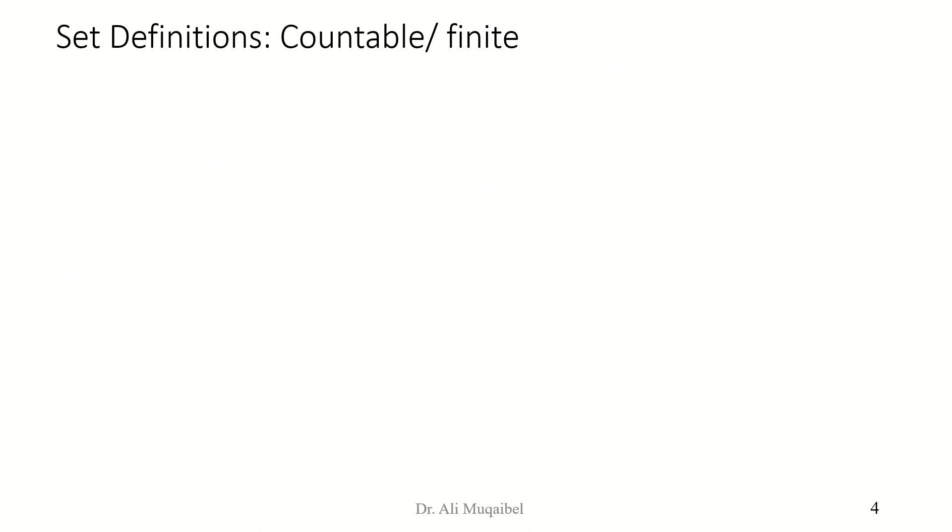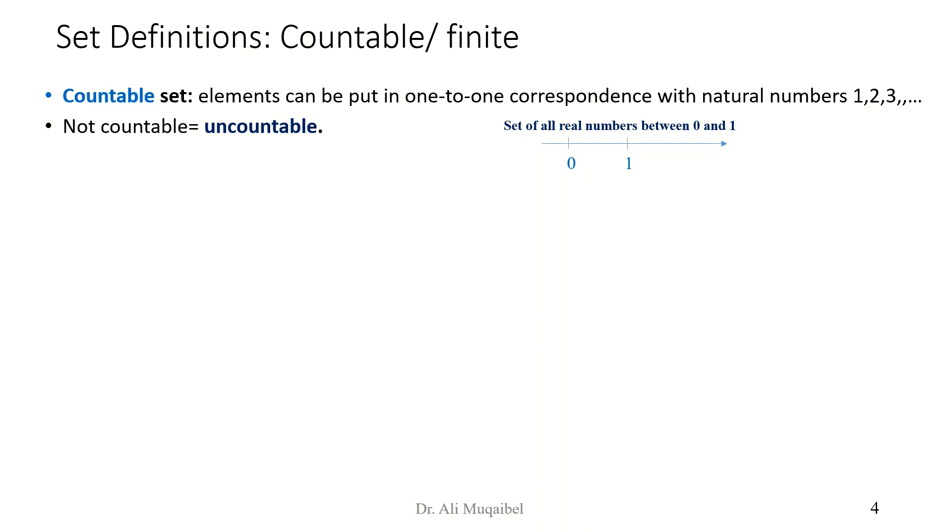Now, let's go over some properties of sets. We can say a set is being countable or uncountable, finite or infinite. Now, a countable set, in the countable set, elements can be put into one-to-one correspondence with the natural numbers, which means you can count them. You can give them numbers 1, 2, 3, 4. If you cannot do this, like in the case of all numbers between 0 and 1, you cannot count them. There are infinite number of them. But in terms of counting, you cannot assign them numbers. It's a continuous domain. So they are not countable.